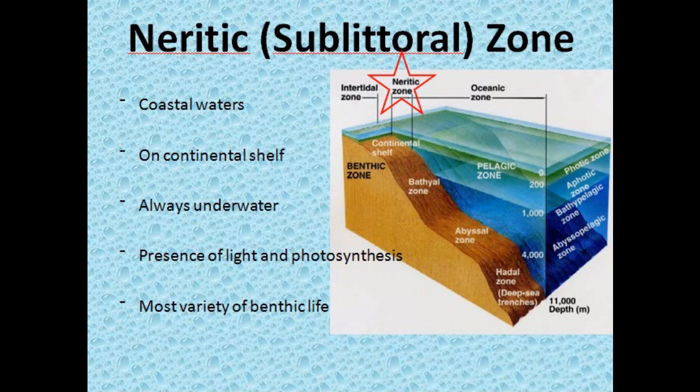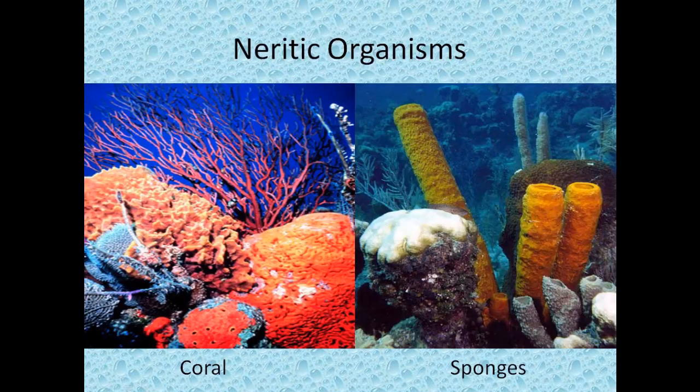The next level of the benthic zone is the neuritic or sublitoral zone. The neuritic zone is the coastal waters on the continental shelf and is below the tides, so it's always under water. There's a presence of light which allows organisms to photosynthesize, resulting in the most variety of benthic life. Neuritic organisms include coral and sponges.